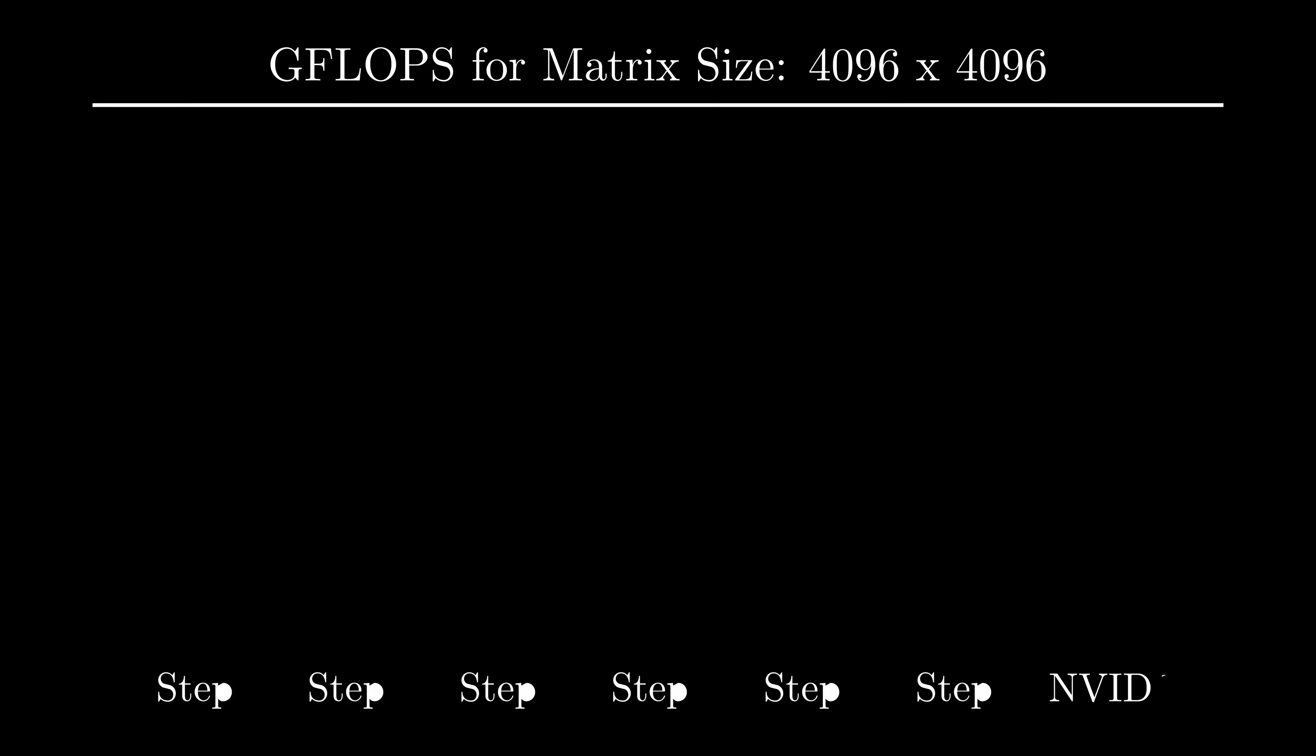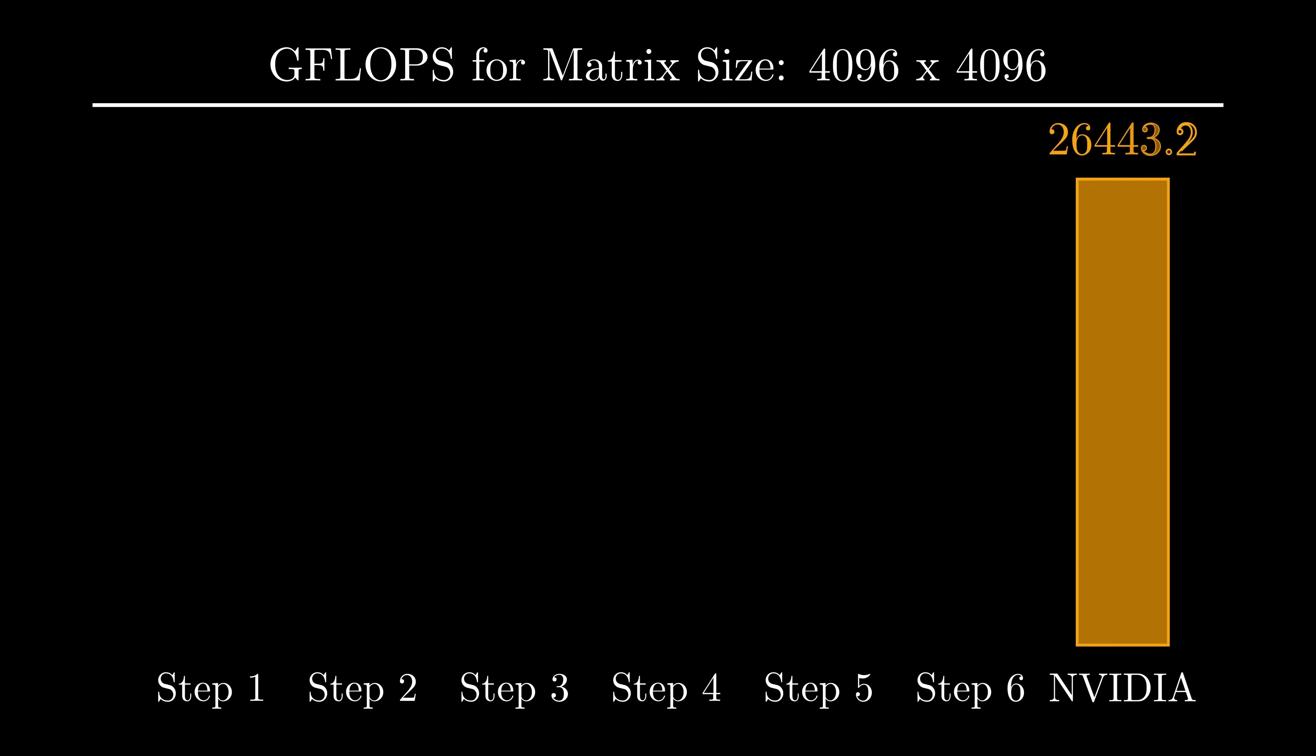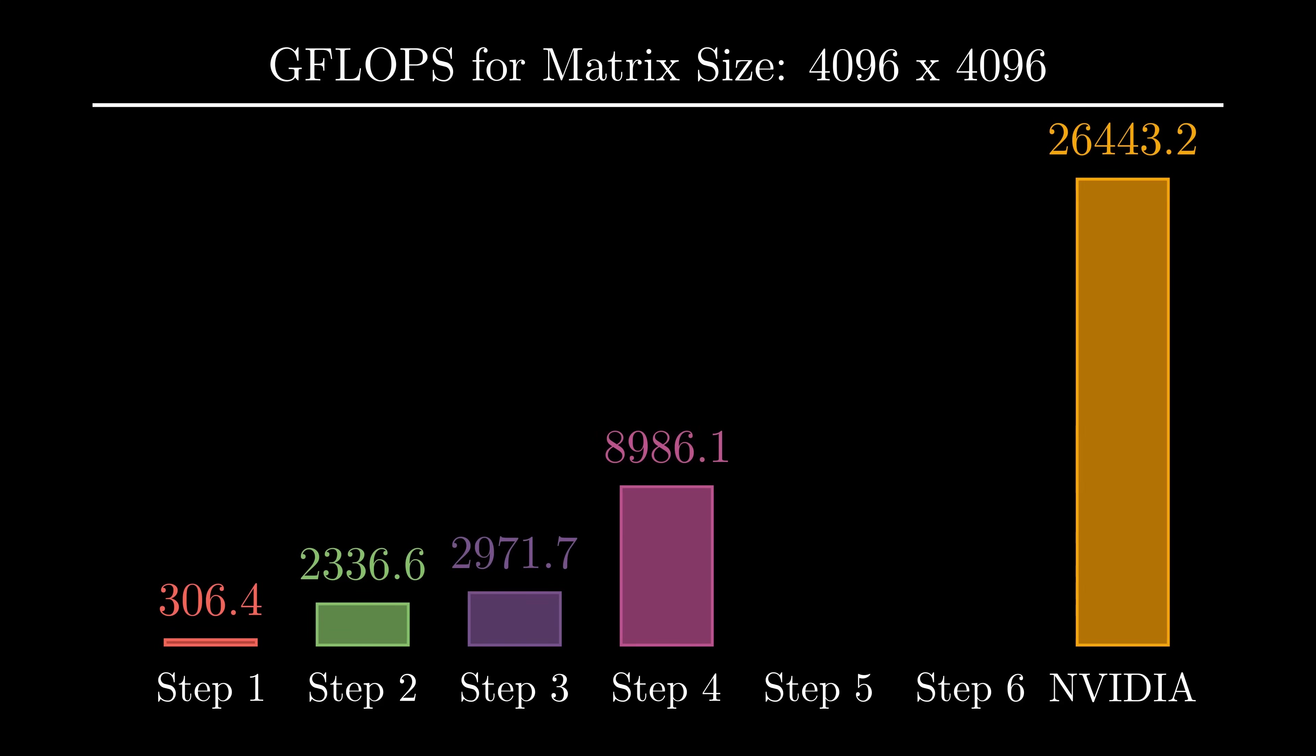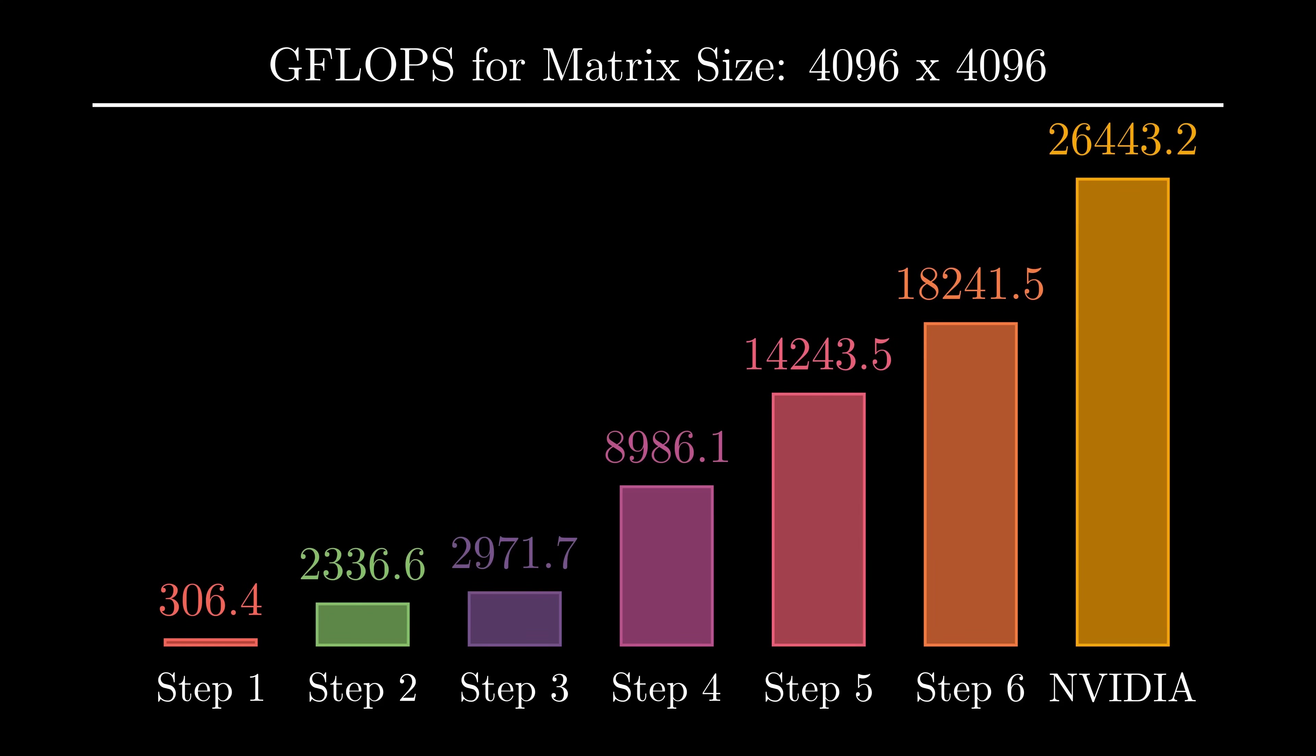NVIDIA's cuBLAS implementation was the benchmark when I started. The first step was a very basic implementation and the numbers reflect that. With coalesced memory accesses, I saw a big jump in performance. Shared memory improved things further, but this was more of a precursor to what I did using the registers. The next natural step was to keep going and use even more registers. Finally, I got around 70% of cuBLAS's performance with vectorized memory accesses. There is still some room left for improvement, but I need time to wrap my head around whatever I've done so far.